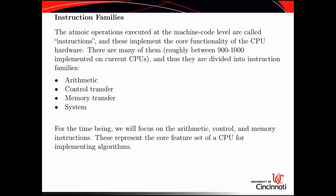Moving on to instruction families: the term 'instruction' is typically used to describe one operation in assembly language — one line of code, called an instruction. Atomic operations executed at the machine code level are called instructions. There are roughly 900 to 1,000 implemented on most CPUs. Because that number is so high, they're usually broken up into instruction families. The grouping is subjective, but I tend to use four groups for simplicity.